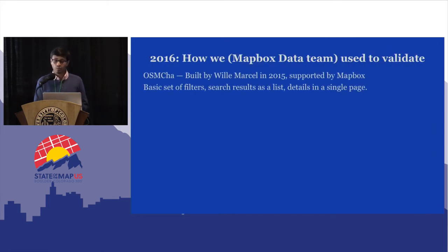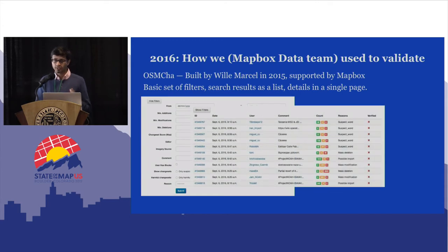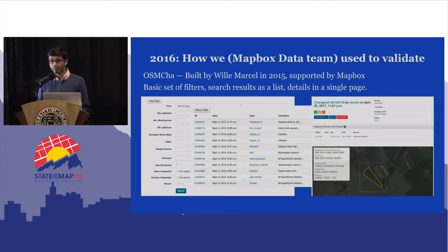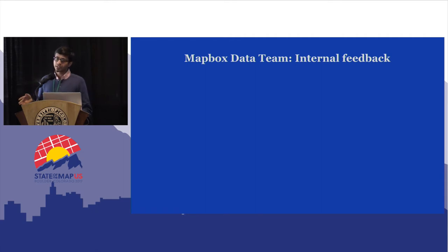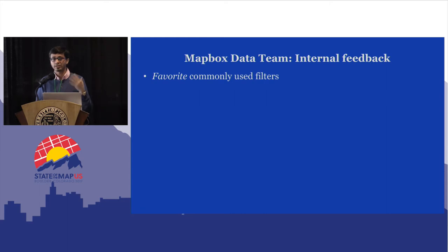I'll quickly talk about how we at the Mapbox data team used to validate. We started using OSM-Char, built by Willy Marcel in 2015. Mapbox actively started supporting and running a global version, improving the interface in collaboration with Willy. It started with a basic set of filters — you'd see search results as a list and see details in a single page. At the end of this year, we spent some time talking to the data team at Mapbox to get internal feedback.